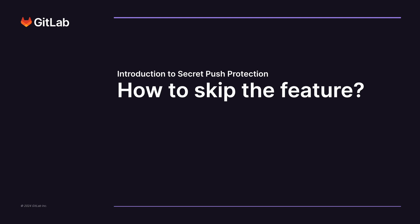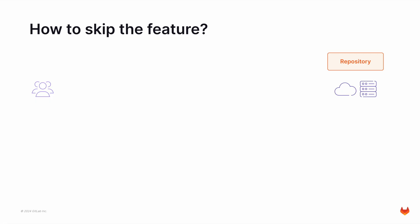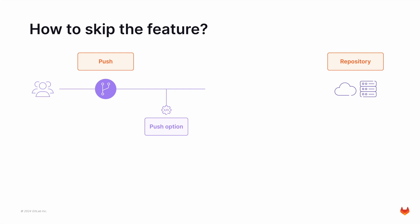In some cases, you may need Secret Push Protection to skip scanning the code. This could be, for instance, if you are committing some kind of a dummy secret that is used for testing. Let's go back to our example: a developer is trying to push some code. When pushing the code, in order to skip Secret Push Protection, they would have to use a git push option. The git push option is normally passed on the terminal to the git client. When the push option is detected, scanning is skipped and the push passes.